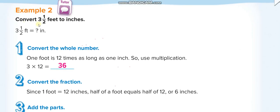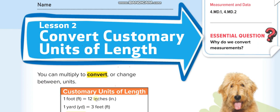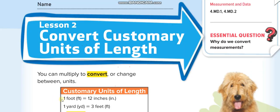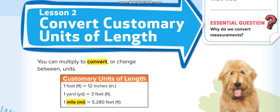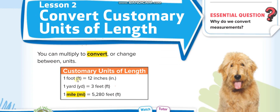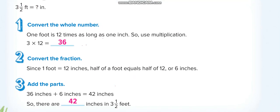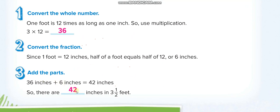Next example: convert 3 and a half feet to inches. One foot equals 12 inches, so 3 feet equals 3 times 12, which is 36 inches. For the half foot: half of 12 is 6 inches. So 36 plus 6 equals 42 inches. Note: we say 'foot' for one and 'feet' for more than one. Abbreviations: ft, yd, mi, in.